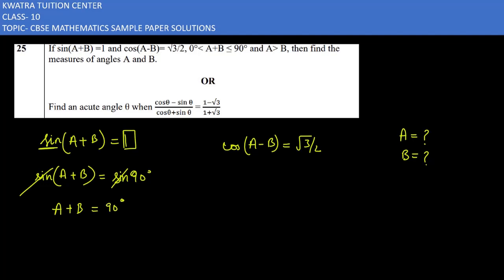Now on this side, you have cos a minus b, and what will happen? It will be cos root 3 over 2. So it is cos 30. So what is our second equation? A minus b is equal to 30.